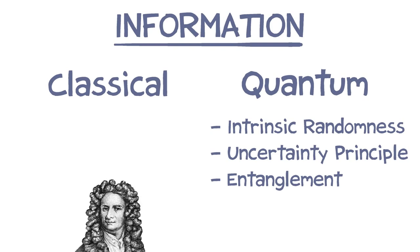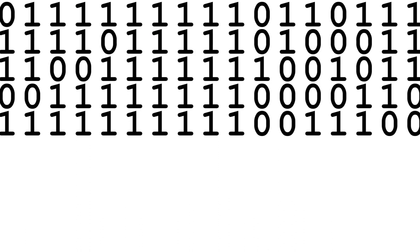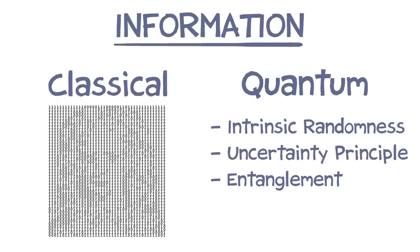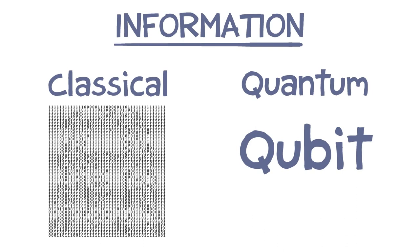Classical information we can express in terms of bits. You can take any amount of information and just write it as a string of bits. And in the quantum case, we call them quantum bits or qubits, and they're different from ordinary bits in some fundamental ways.